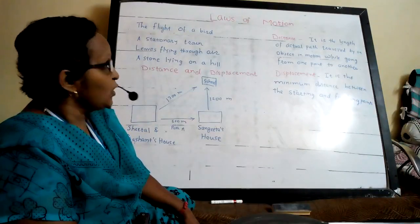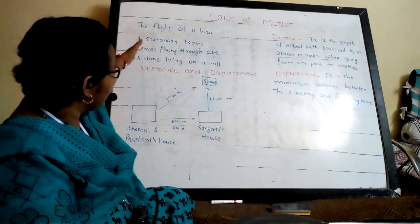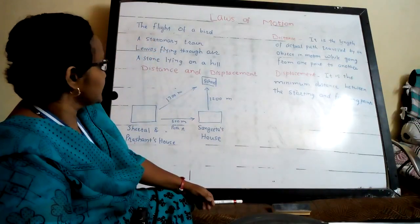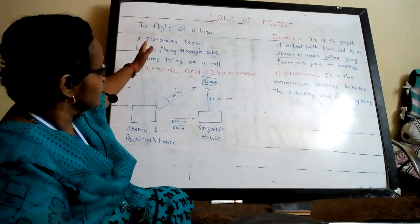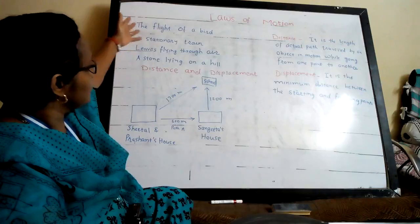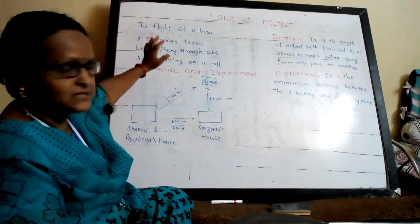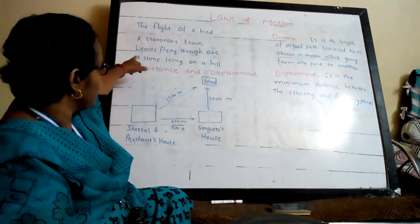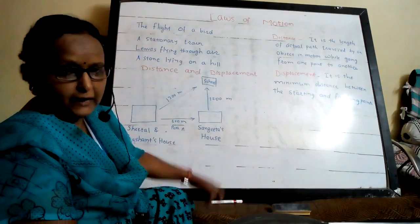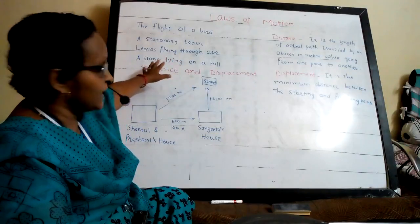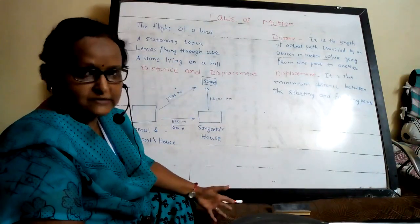Now I am going to start the first chapter of Science 1 — the Laws of Motion. Regarding motion, we have studied so many things last year. Examples given in the book: the flight of a bird, a stationary train, leaves flying through air, a stone lying on a hill. In the flight of a bird you can see motion; a stationary train is not in motion; leaves flying through air show movement; a stone lying on a hill is also stationary.